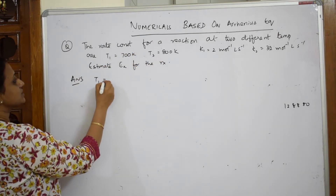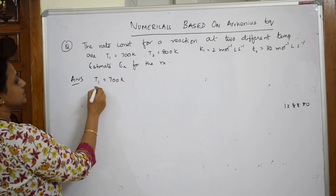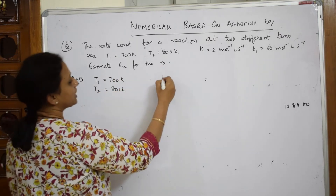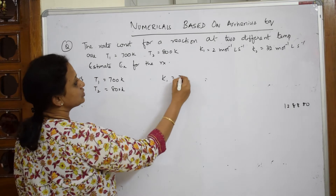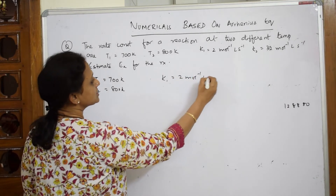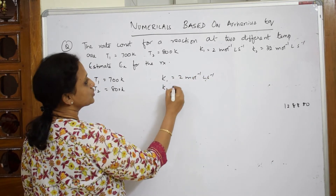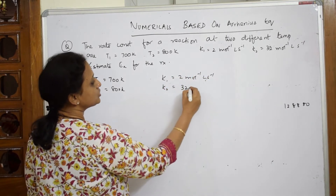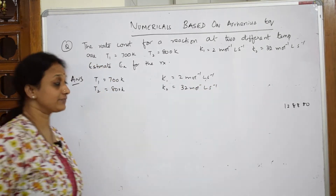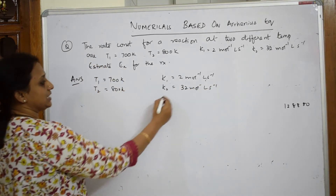The data given is: T1 is equal to 700 K, T2 is equal to 800 K, K1 is equal to 2 mole inverse litre second inverse, K2 is equal to 32 mole inverse litre second inverse. We have to estimate the activation energy, Ea.